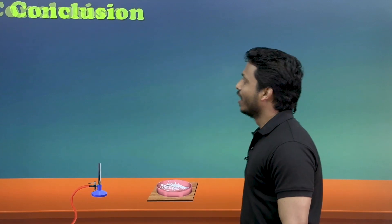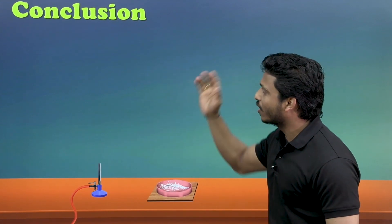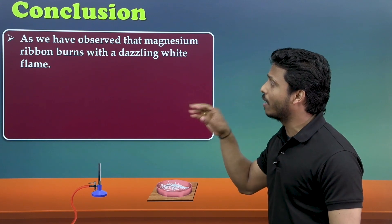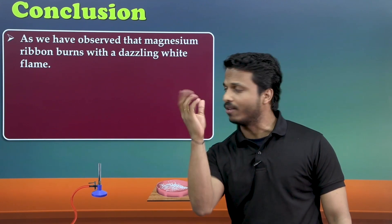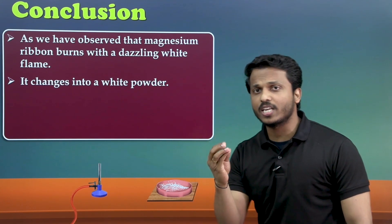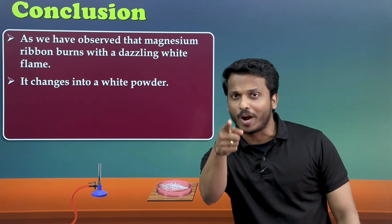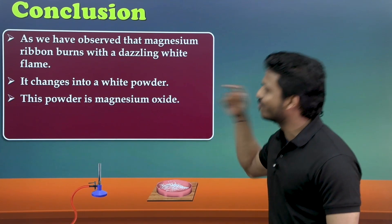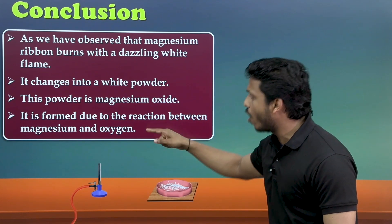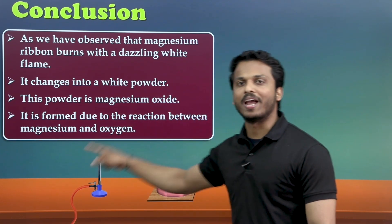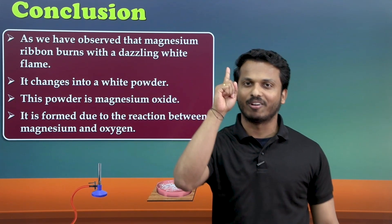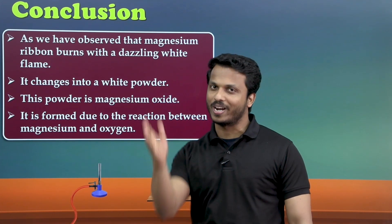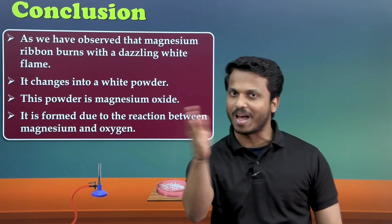The conclusion of Activity 1: the magnesium ribbon burns with a white dazzling flame and changes into a white powder called magnesium oxide (MgO), formed due to the reaction between magnesium and oxygen. This is our first activity demonstrating a chemical reaction.